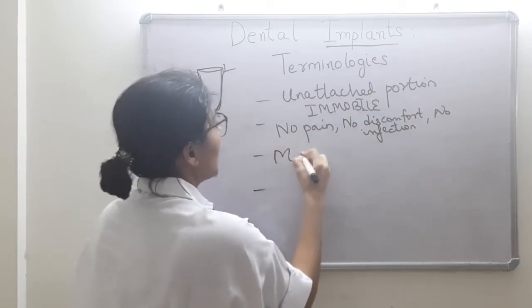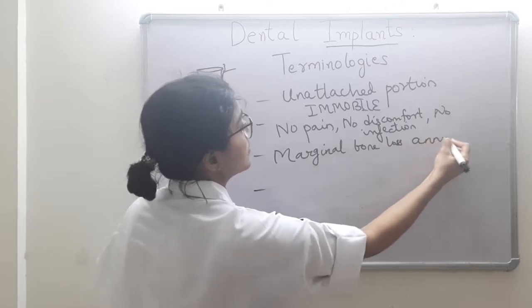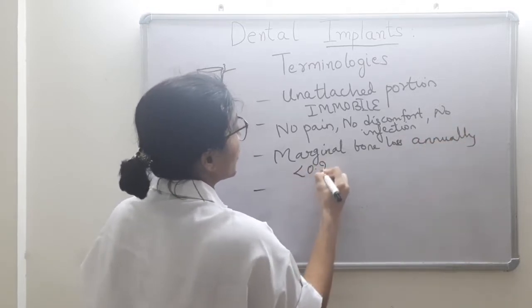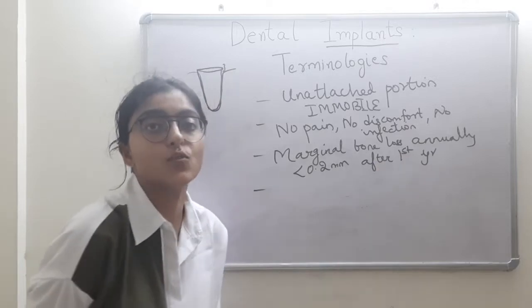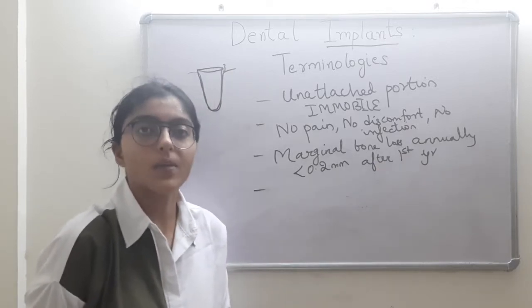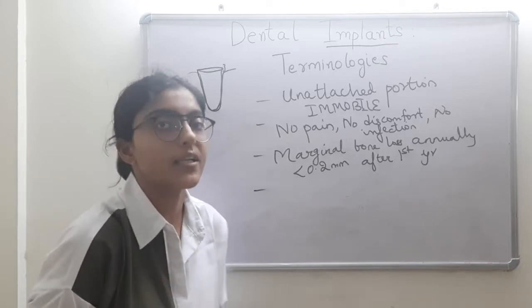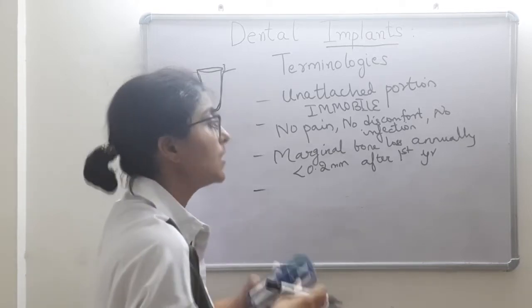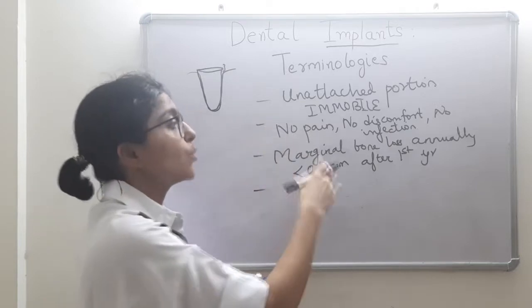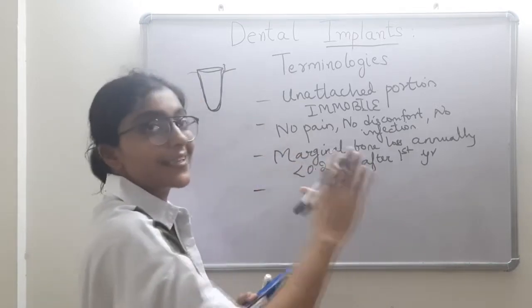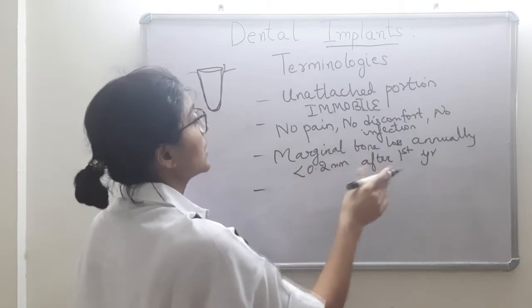The third criterion: marginal bone loss annually of less than 0.2 mm after the first year. As we discussed previously, anything that goes wrong with an implant most commonly happens in the first year. After one year, the implant attains secondary stability and bone complications are unlikely; issues that arise tend to be at the soft tissue level, such as mucositis.